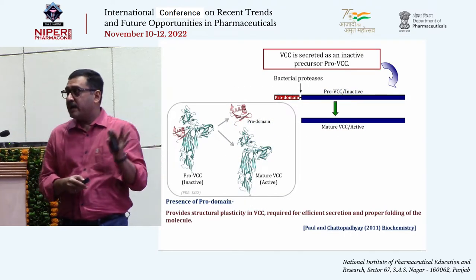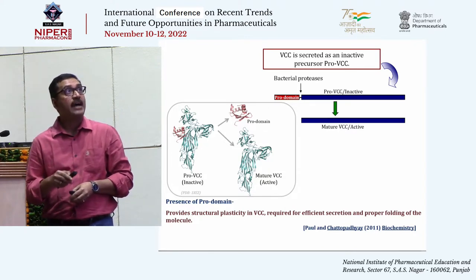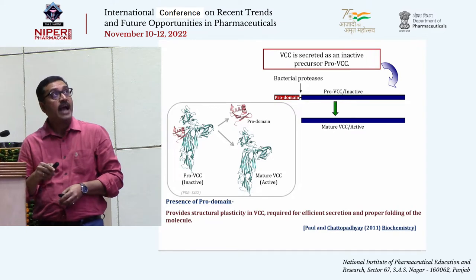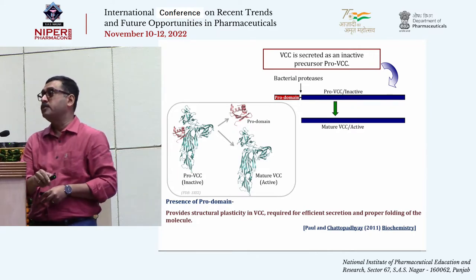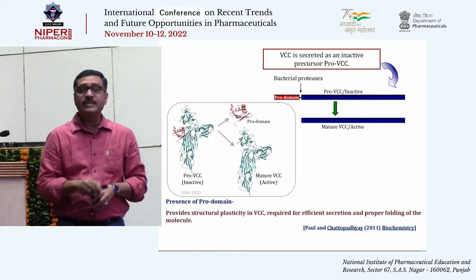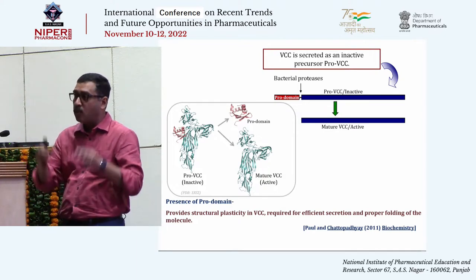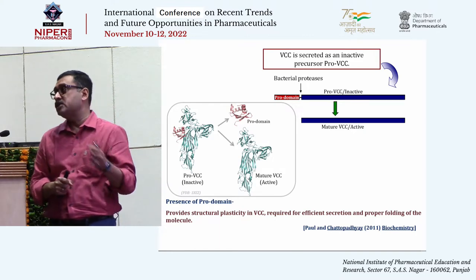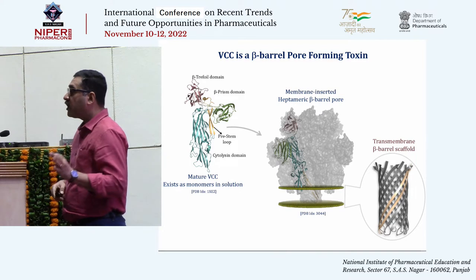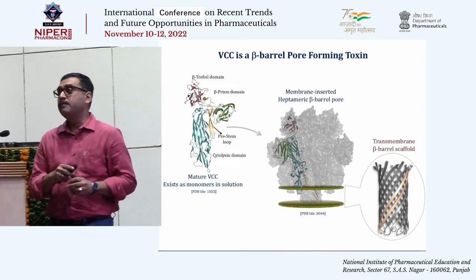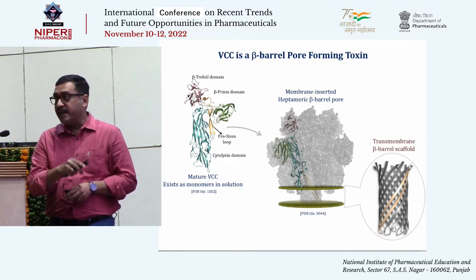How does it work? Bacteria secrete VCC as a precursor molecule termed pro-VCC. Upon secretion and by the action of bacterial proteases, this N-terminal pro-domain gets removed and the mature active form of the toxin gets liberated. In one of our earlier studies, we showed that the presence of this pro-domain provides some structural plasticity in the molecular architecture of the toxin, which may be required for efficient secretion and proper folding of the toxin molecule.